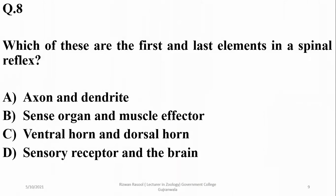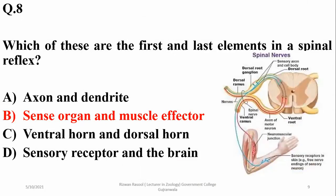Which of these are the first and last elements in a spinal reflex? As far as a spinal reflex is concerned, it starts from the receptor or sense organ and ends at the effector. So beta is the right option.